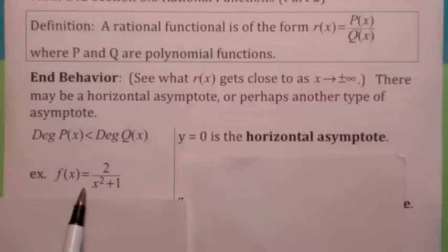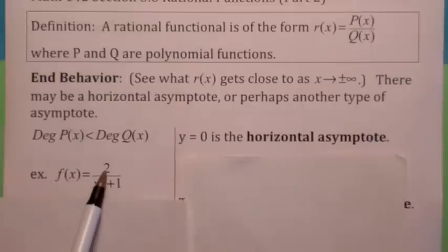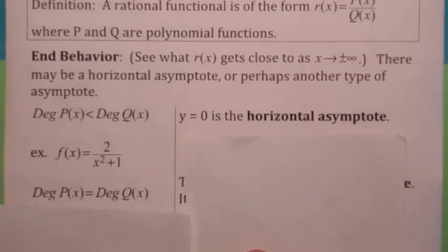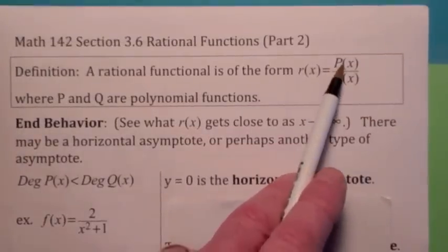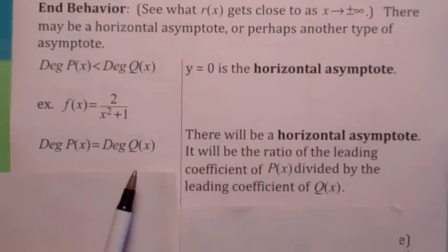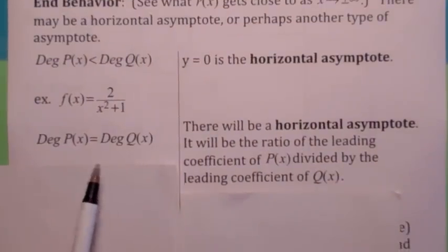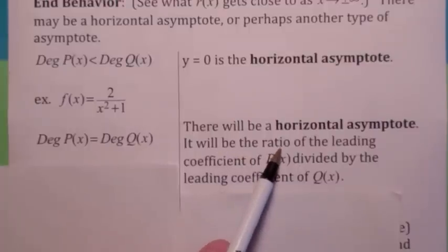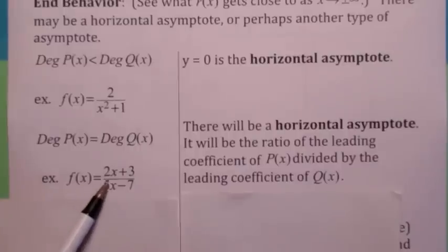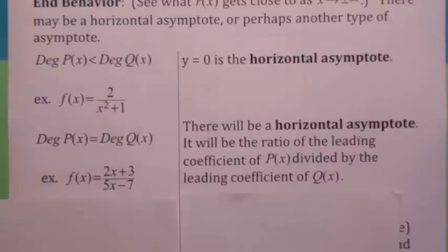That's not too hard to see — look at this example. If x is getting to be like 100, you'd have 2 over 100 squared plus 1. Isn't that getting very close to zero? Now, what if the numerator and denominator have the same degree? If they have the same degree, there will also be a horizontal asymptote, but it will be y equal to the ratio of the leading coefficients. Here's an example: both have degree 1, and the end behavior as x gets close to plus or minus infinity means the y-values are getting close to 2 fifths.